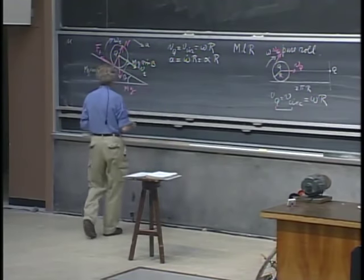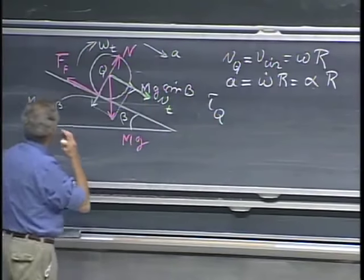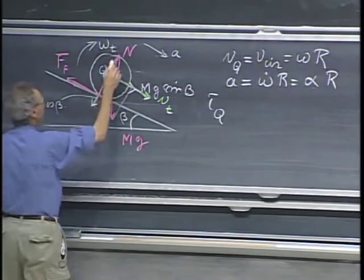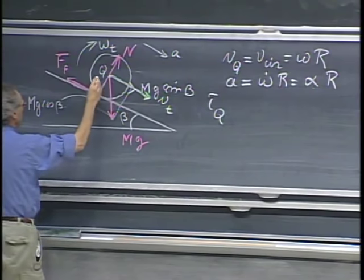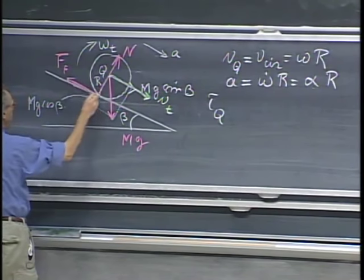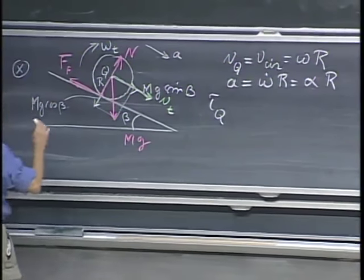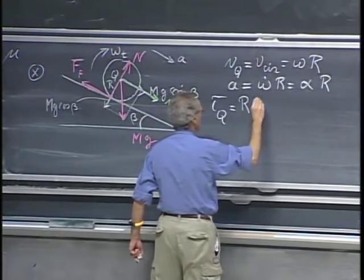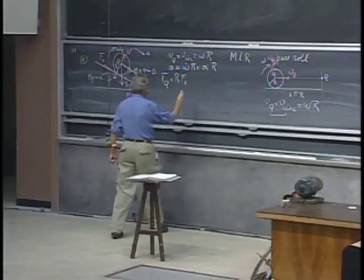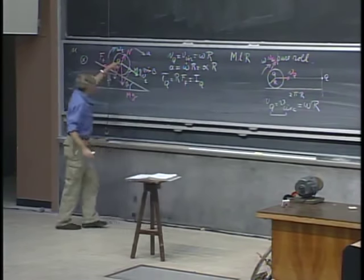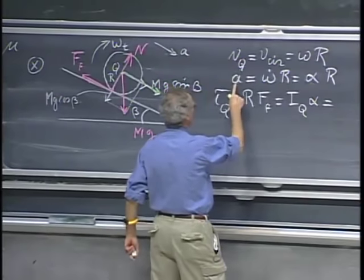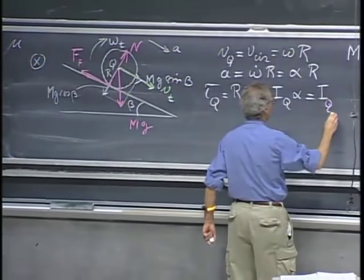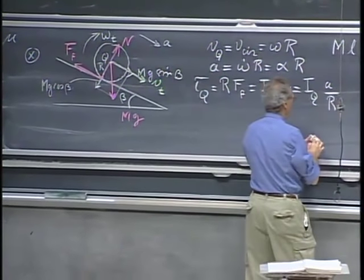Now I take the torque about point Q. When I take the torque about Q, the normal force N has no effect because it goes through Q, and mg has no effect because it also goes through Q, so there is only one force that contributes to the torque. If this radius is r, the magnitude is r·f_f. This must equal I·α, where I is the moment of inertia for rotation about the axis through point Q. I can replace α with a/r, so I get I_Q · (a/r). This is my first equation, with unknowns f_f and a.